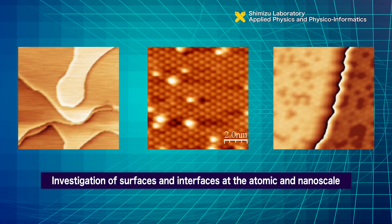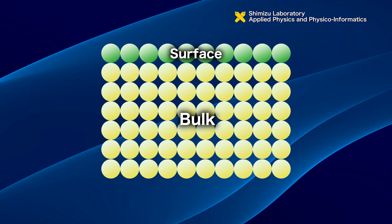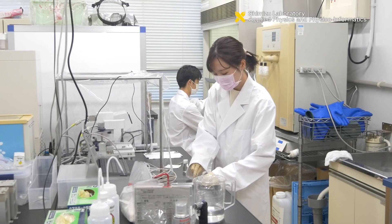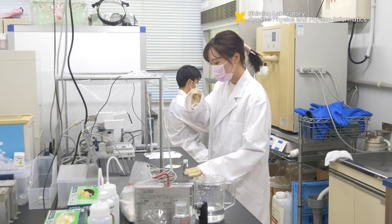Shimizu Group deals with these surfaces and interfaces at a nanoscale, that is, one over one billionth of a meter. Surfaces and interfaces show a huge difference from the material internal bulk. They are much more complex than the bulk.